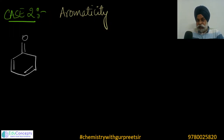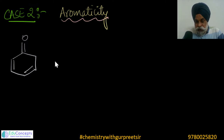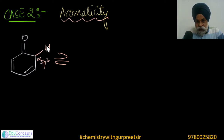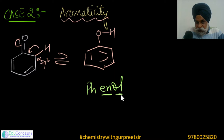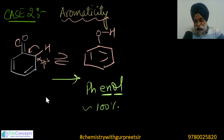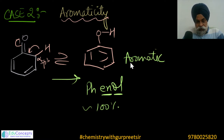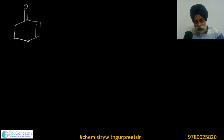The second case where enol predominates is when aromaticity is attained in the enolic form. For example, in cyclohexadienone, the alpha carbon is sp3. When that hydrogen moves, what you get is phenol — the enol form — which is almost 100% predominant because the system gains aromatic character. Aromaticity drives the equilibrium strongly toward the phenol side.